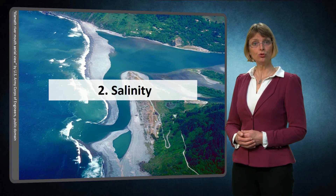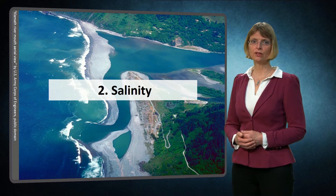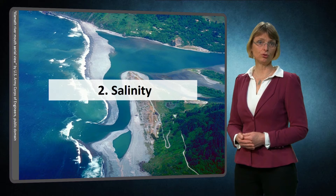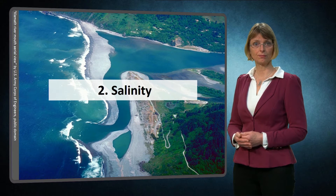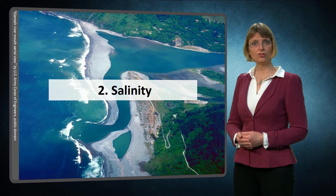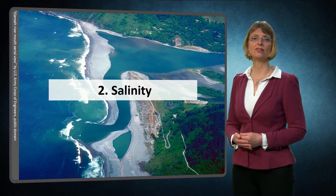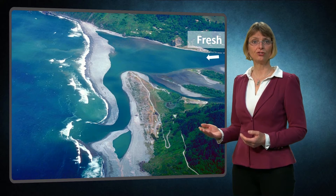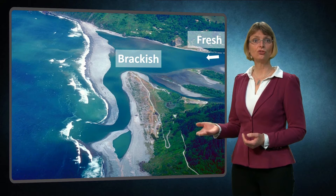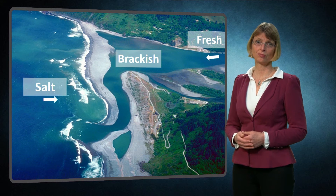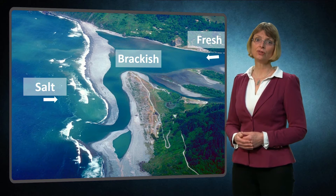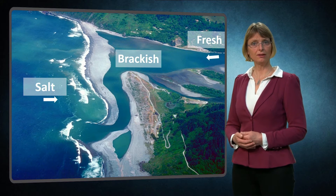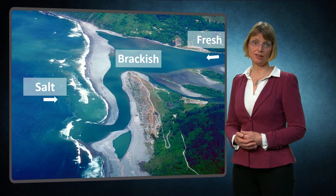If we zoom in to a more detailed scale, the second main determinant of ecosystem type is salinity. Ecologists distinguish the following salinity classes: namely fresh, brackish and saltwater ecosystems. Each of these environments is inhabited by different species, dependent on their salinity tolerance.